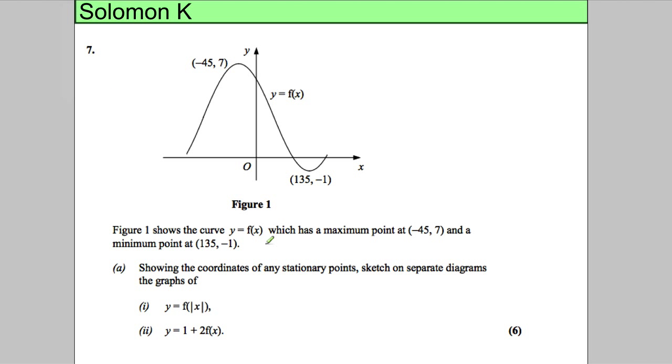In this question, we're given a curve y = f(x). We're told it has a maximum point at (-45, 7) and a minimum point at (135, -1). Obviously it's a scaled diagram. We're asked to sketch the following curves, showing the coordinates of any stationary points.